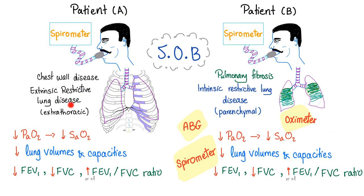You have two patients. Both have restrictive lung disease. One has extrinsic restrictive lung disease such as chest wall disease; the other has intrinsic restrictive lung disease such as pulmonary fibrosis. How to differentiate without a radiologist? You do the ABG — hypoxemia in both. Oximetry — decreased oxygen saturation in both. Spirometry — decreased lung volumes and increased FEV1/FVC ratio in both. So the ABG, pulse oximeter, and spirometer all fail to differentiate them.